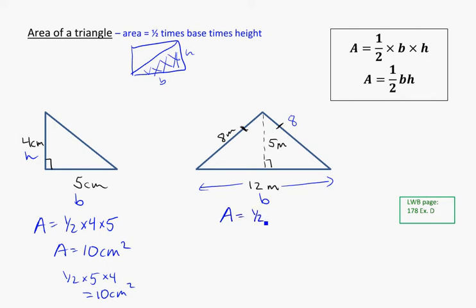Our area will be 1/2 × 12, which is the base, times 5, which is the height. Again, because that's perpendicular, it's at a right angle to the base. So in this case, we're going to have 12 × 5 is 60, times a half, or half of 60 is 30 meters squared for my area.